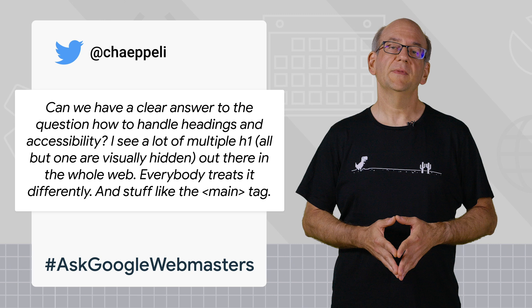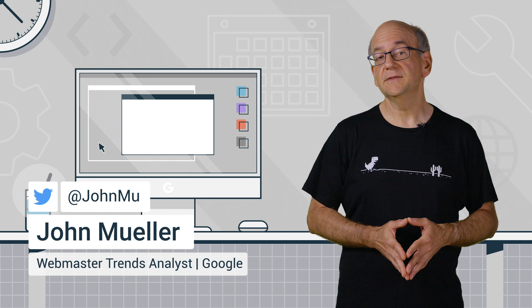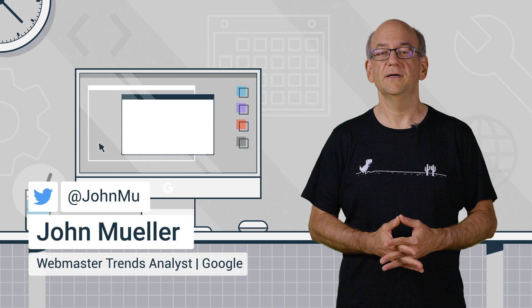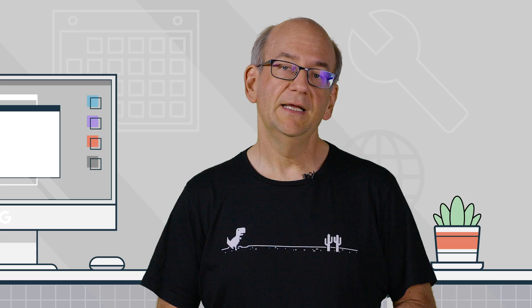So this is a pretty common question, and it's pretty straightforward. Our systems don't have a problem when it comes to multiple H1 headings on a page — that's a fairly common pattern on the web. We use headings to better understand the context of different parts of a page. Having clear, semantically understandable headings is useful in understanding any given page. However, we have to work with the web as we find it, and a lot of it isn't semantically structured at all.